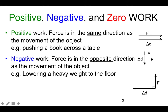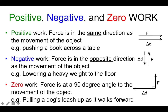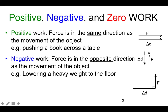If the force and the direction that the object is moving are in opposite directions, then this is considered negative work. For example, if you lower a heavy weight to the floor — in order to hold the weight up, you're applying a force upward, but the distance being traveled is downward, so those are opposite to each other.